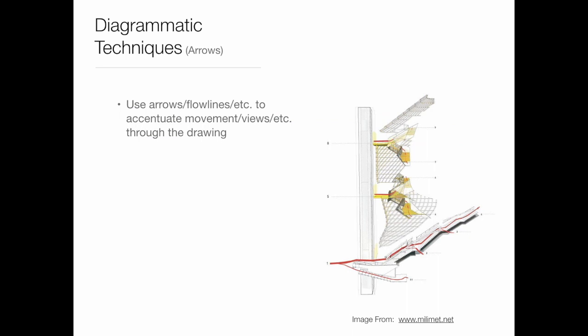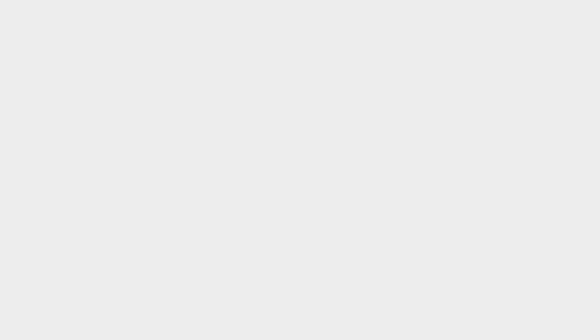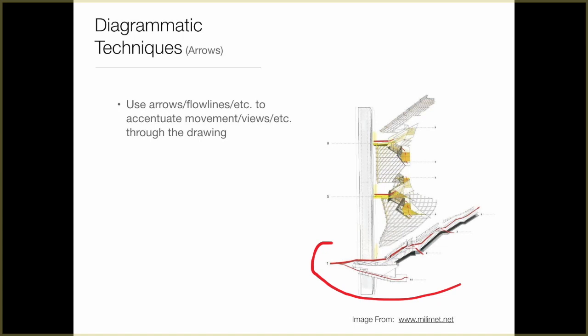Arrows or flow lines accentuate movement through a building or a strong idea about something. A good example here has a particular building with a red line going through it — it doesn't even have an arrow on it, but notice it starts out thick. As we enter the building, a piece branches off and goes down, representing people walking into the building with some branching off while the bulk continue straight. They move up to the first tier, then some more branch off, and the line gets smaller. So it's telling us information about how people move through the space — that's what these arrows are really good at showing: movement through space.